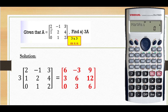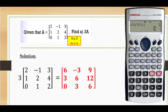Element 1,1 is 2. Element 1,2 is negative 1. Element 1,3 is 3. Then element 2,1 is 1. Element 2,2 is 2. Element 2,3 is 4. Then element 3,1 is 0. Element 3,2 is 1. And the last one — 3,3, third row, third column — is 2.